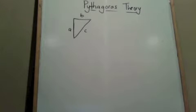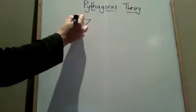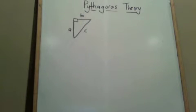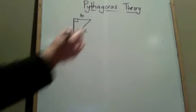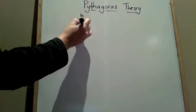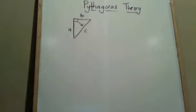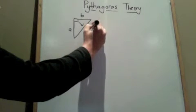However, Pythagoras theory is only true for right angled triangles. Remember one fact that the right angled triangle has its longest side opposite the right angle and this is known as the hypotenuse.